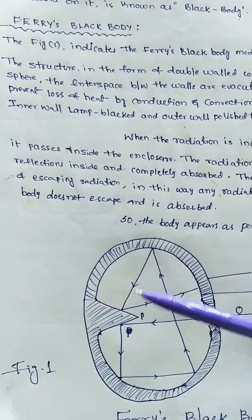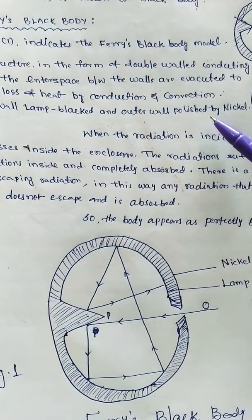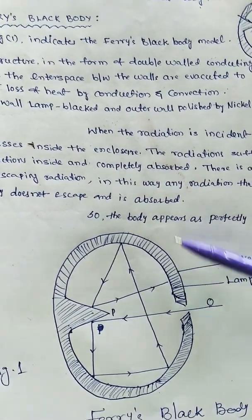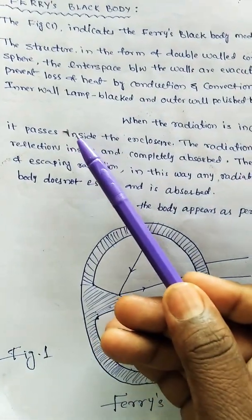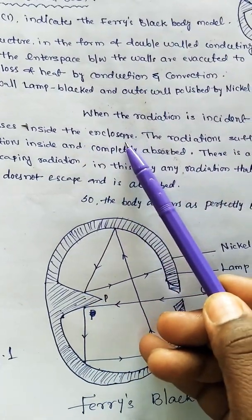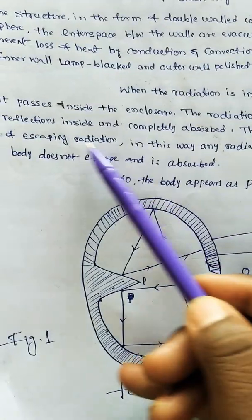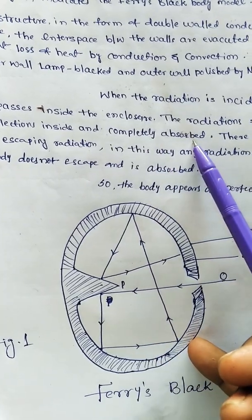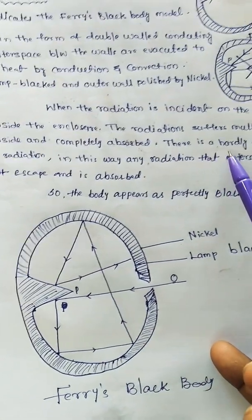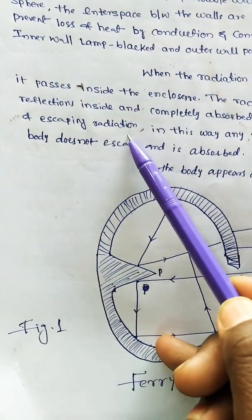When the radiation is incident on the hole, it passes inside the enclosure. The radiation suffers multiple reflections inside and is completely absorbed. There is hardly a chance of escaping radiation.